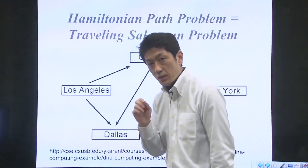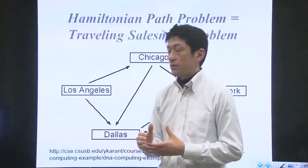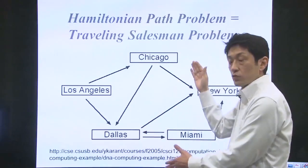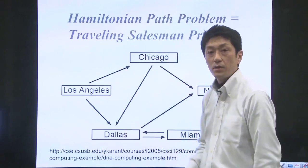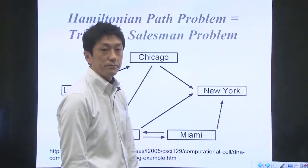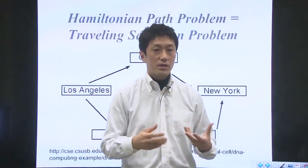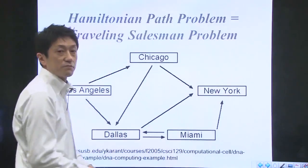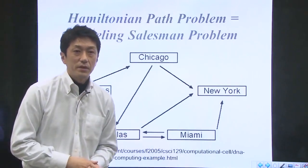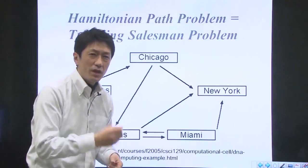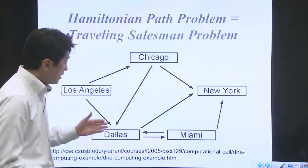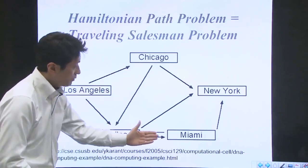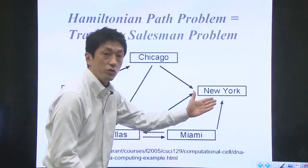Let's consider a simplified example. Suppose that a salesman starts from Los Angeles and needs to visit all three cities — Dallas, Chicago, and Miami — before his final destination, New York. The airline he has a mileage membership with has a limited number of connecting flights. What is the best itinerary? Since this is simplified, it's easy to figure out: starting from Los Angeles, he needs to fly to Chicago, then Dallas, Miami, and then to New York. This is the best one.